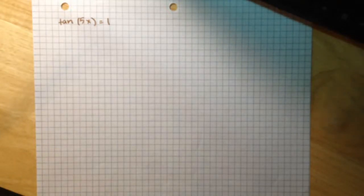We are asked to find all of the exact solutions to the following equation, tangent of 5x equals 1, and to use the parameter k as necessary to represent any integer, and after that to list those solutions which are in the interval 0 to 2 pi.